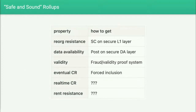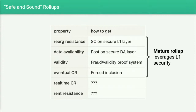First I want to introduce this concept of a safe and sound rollup. We want some properties for these rollup systems. The first type of properties are security properties that an L2 rollup inherits from L1. These are reorg resistance, data availability, validity, and eventual censorship resistance. There are mechanisms for this that different rollups are implementing.